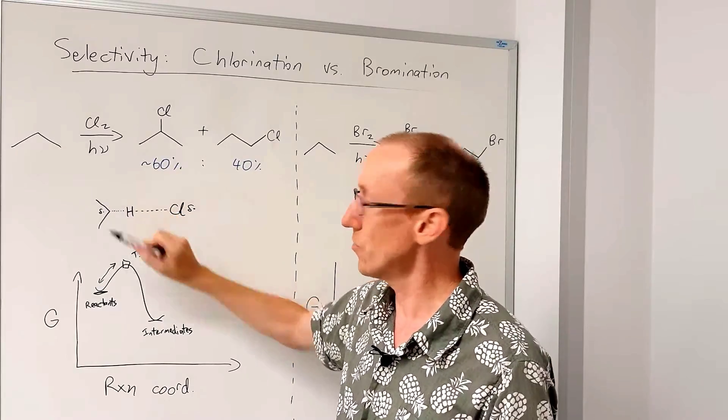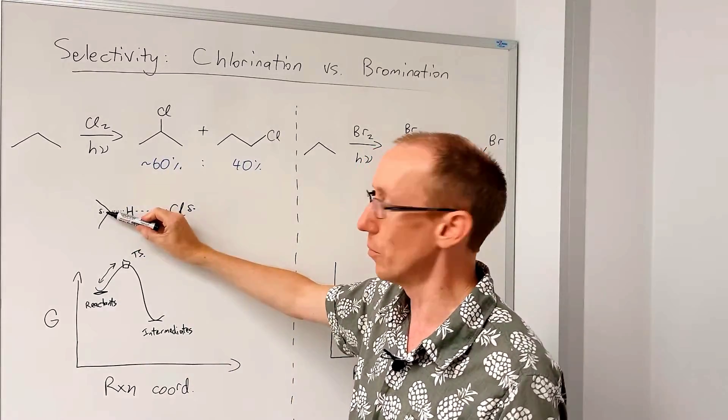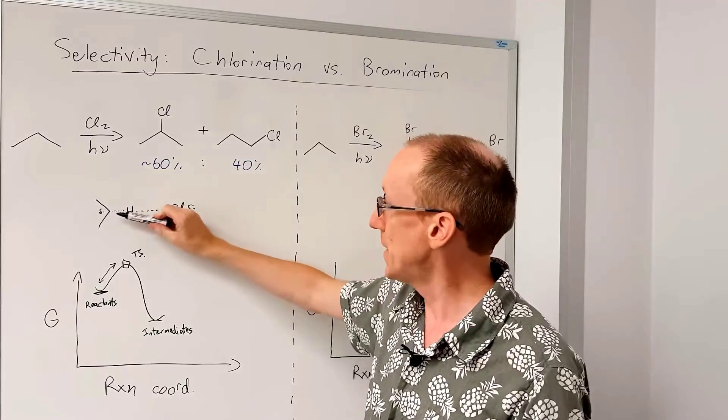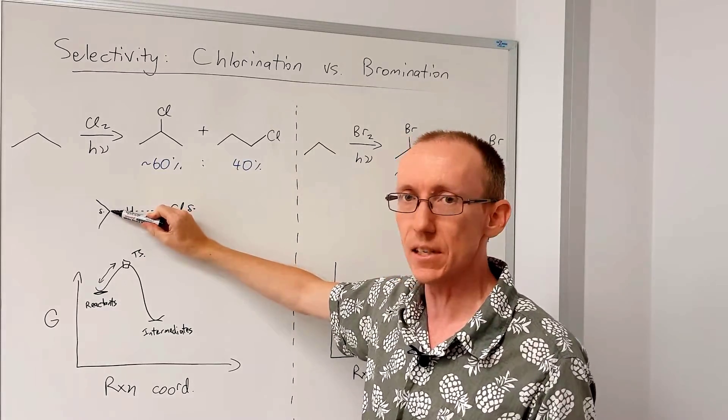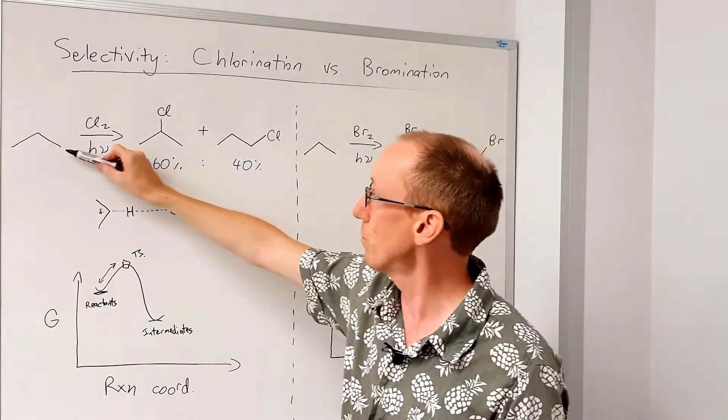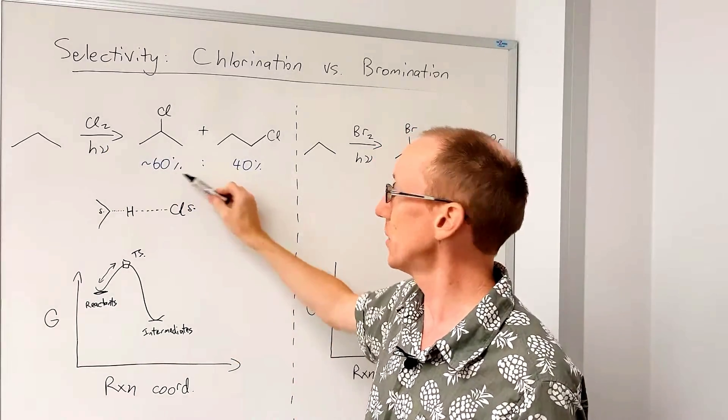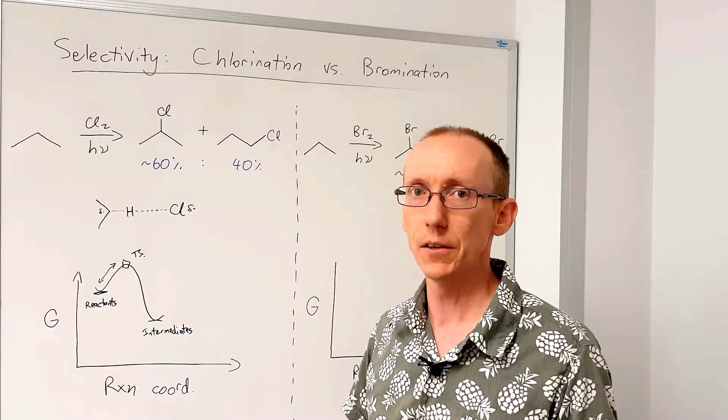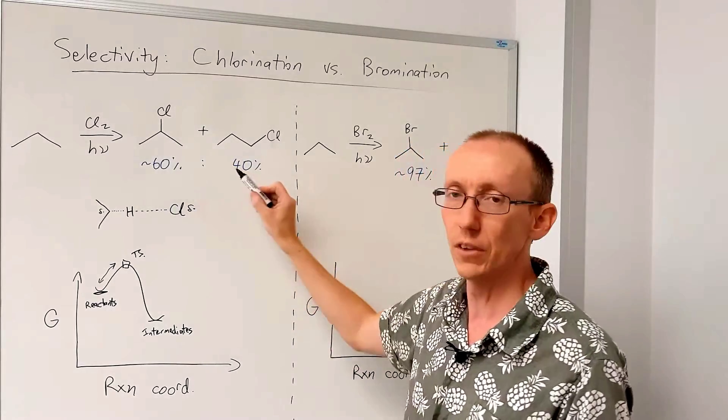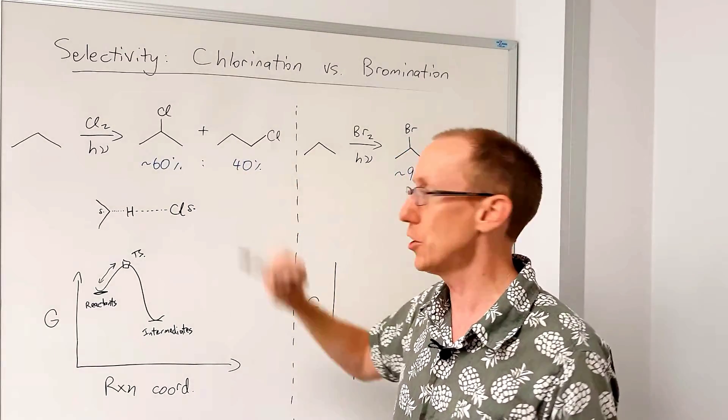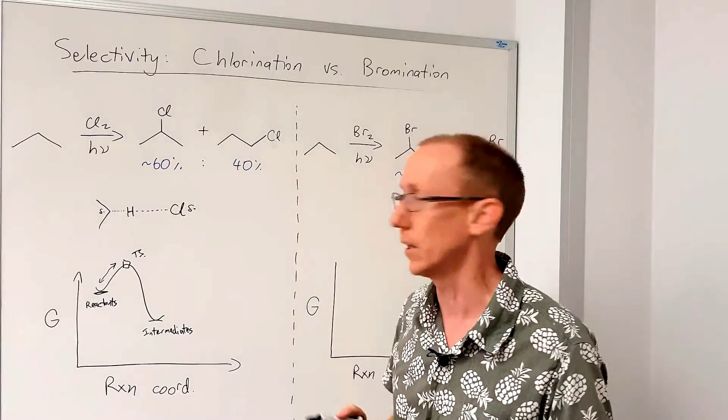And so this secondary radical, we know that secondary radicals are more stable than primary. But the difference between this transition state and the one leading to the primary radical, there's not a lot of energy difference. And so we see relatively little difference in energy, very little difference in the ratio of the two, or very little selectivity.